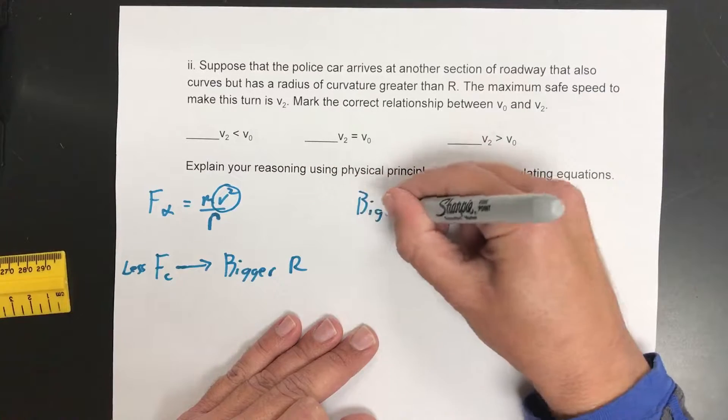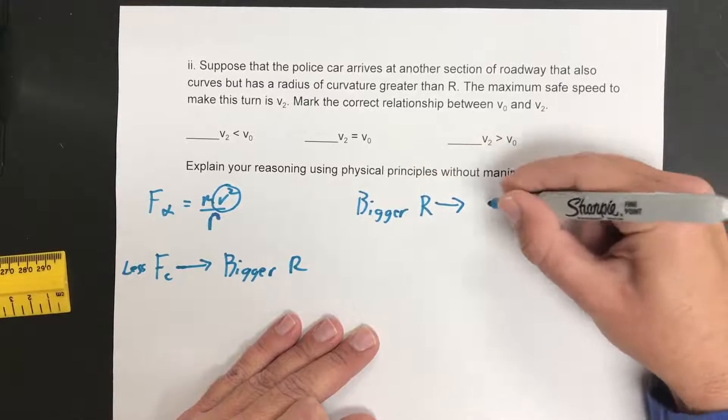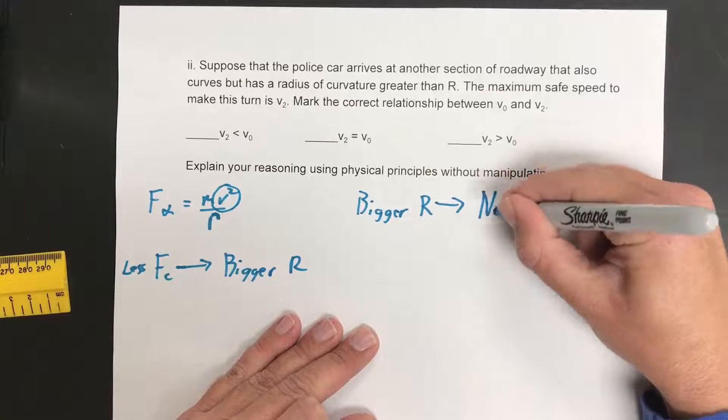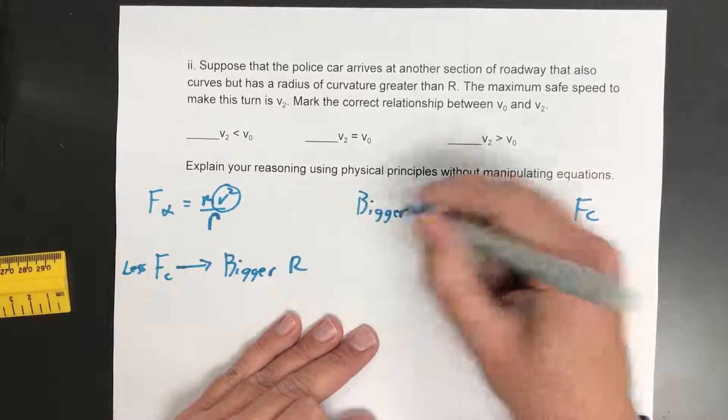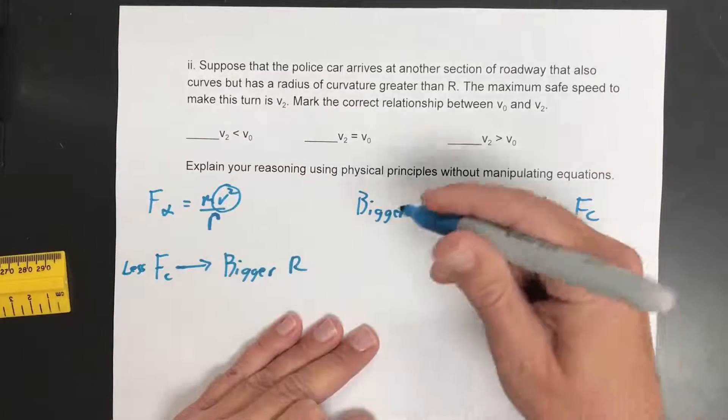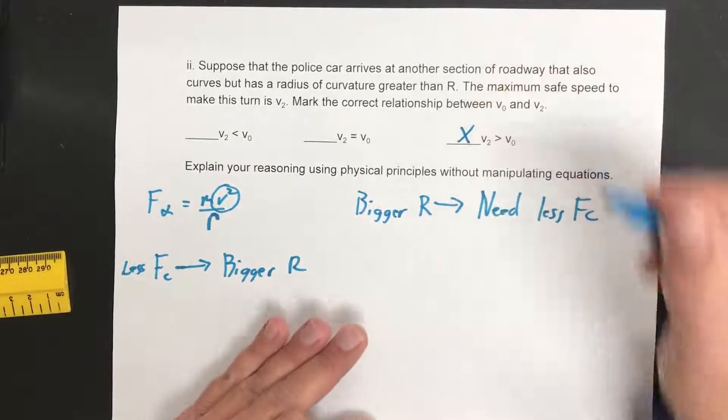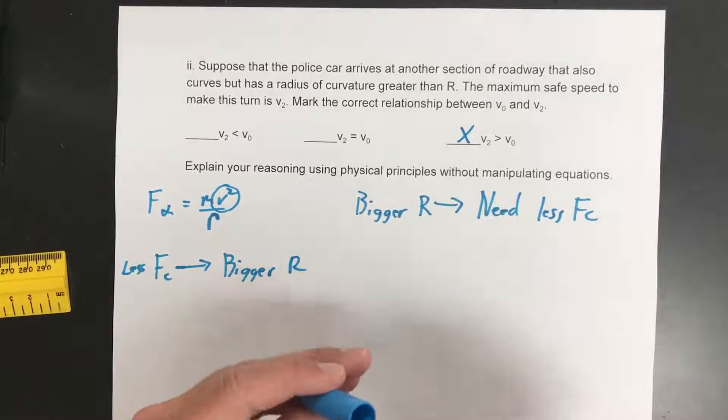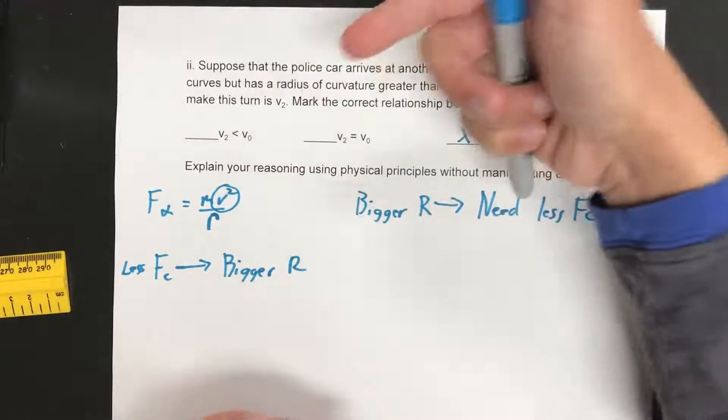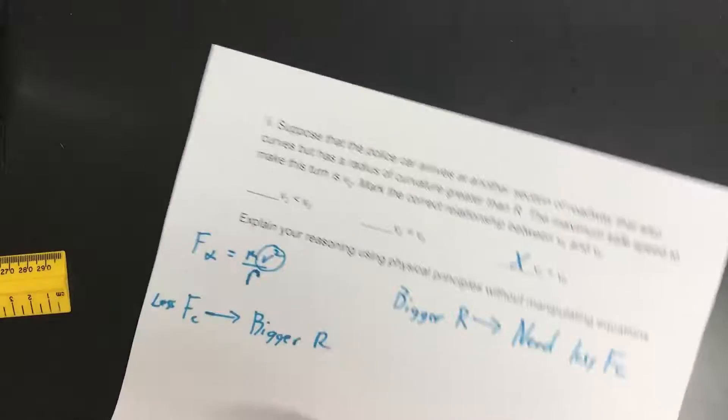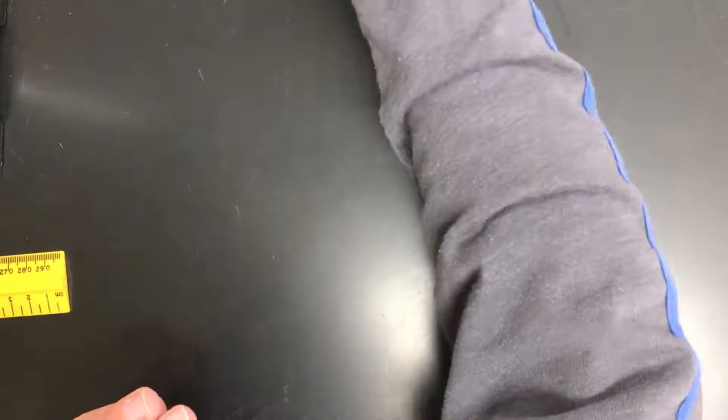Let me actually write it this way. A bigger radius, we need less centripetal force. That allows us to have a greater velocity there. So v2 can be bigger than v0. A bigger radius, another way to think about it is inertia. It's easier to turn a bigger radius because it's not fighting inertia as much.